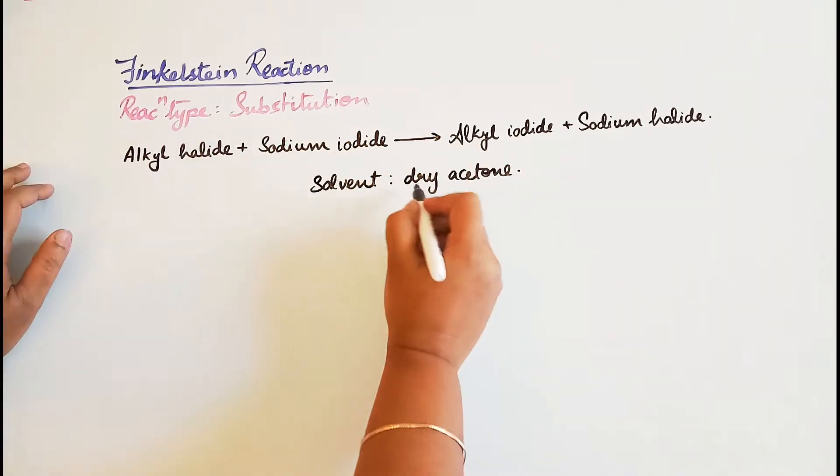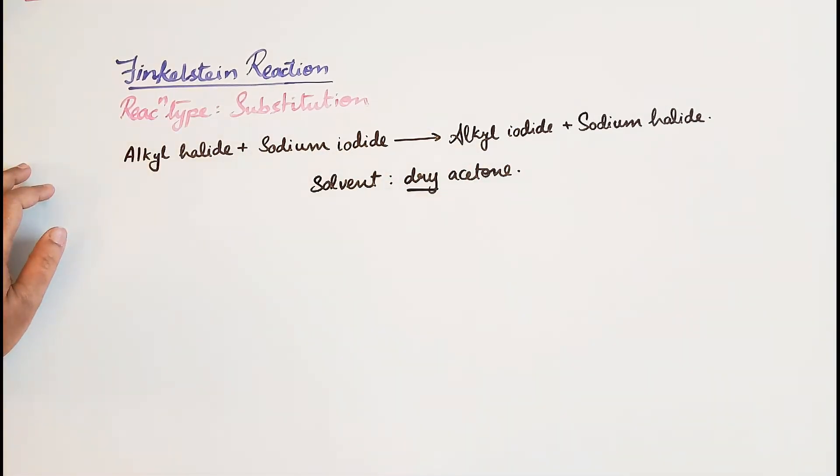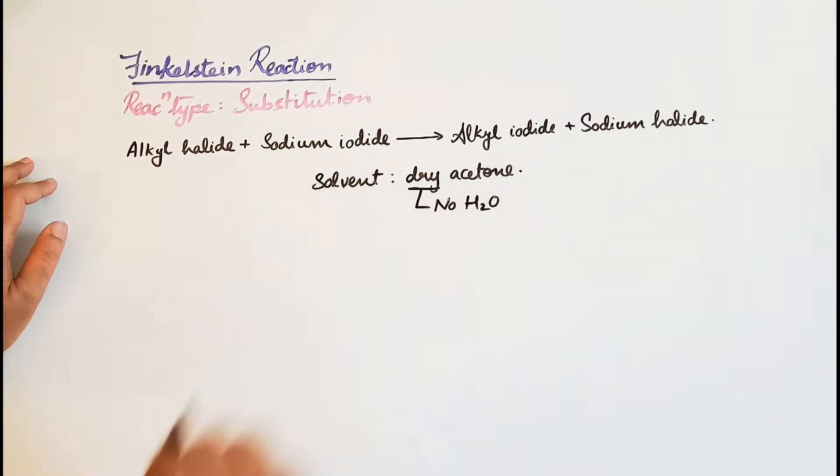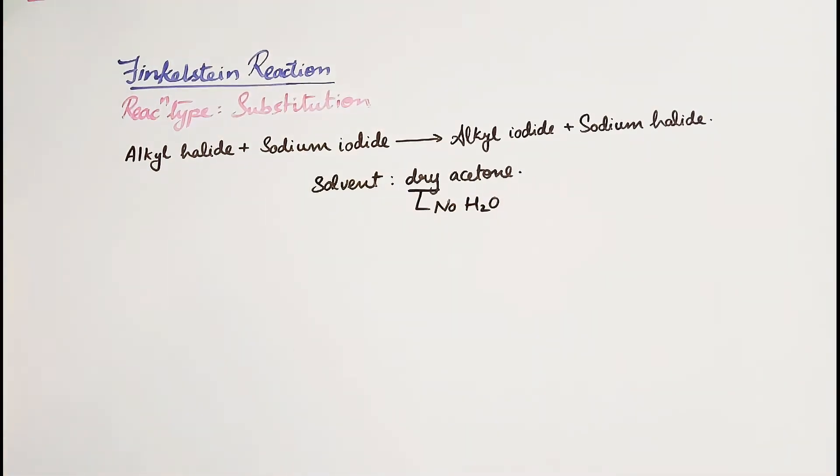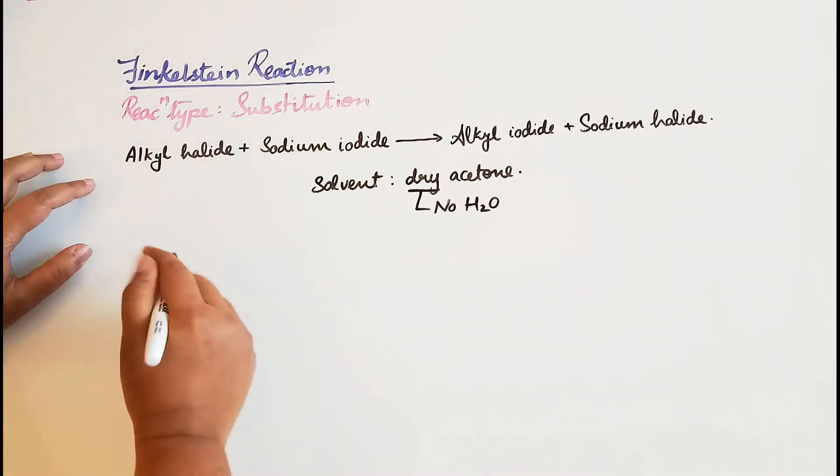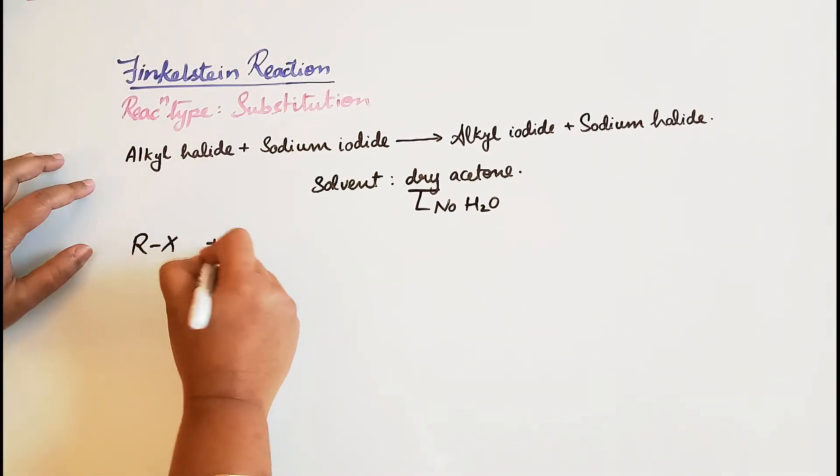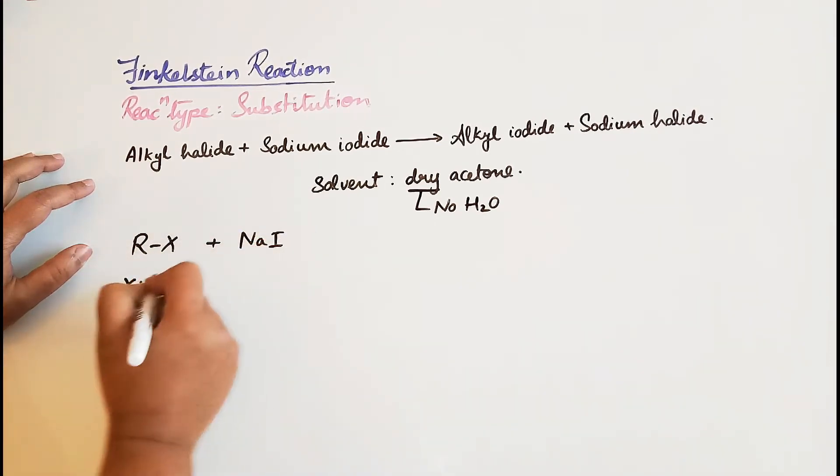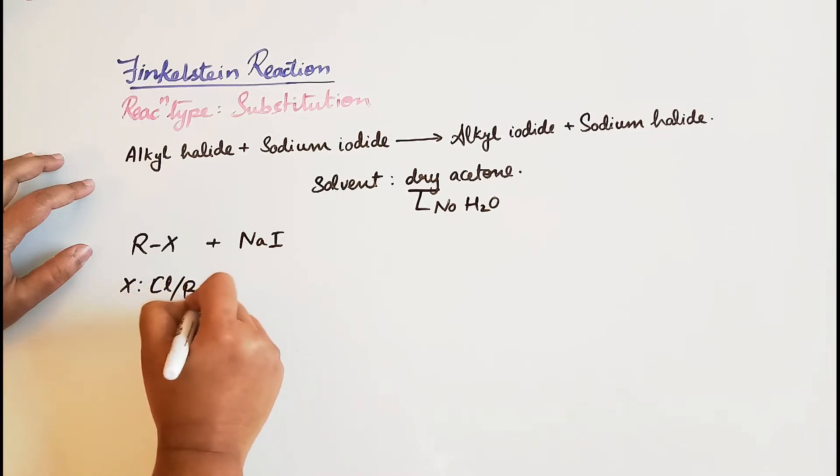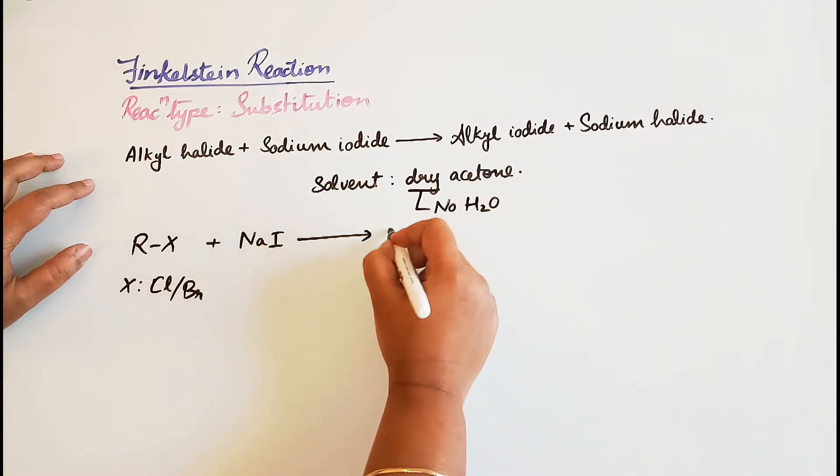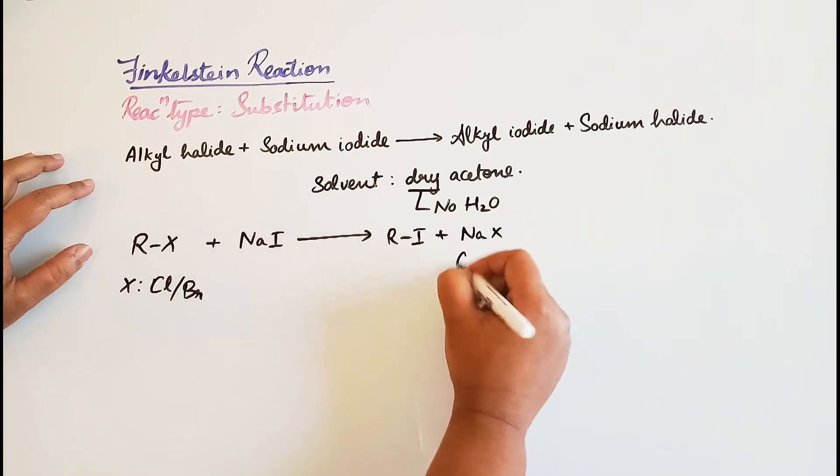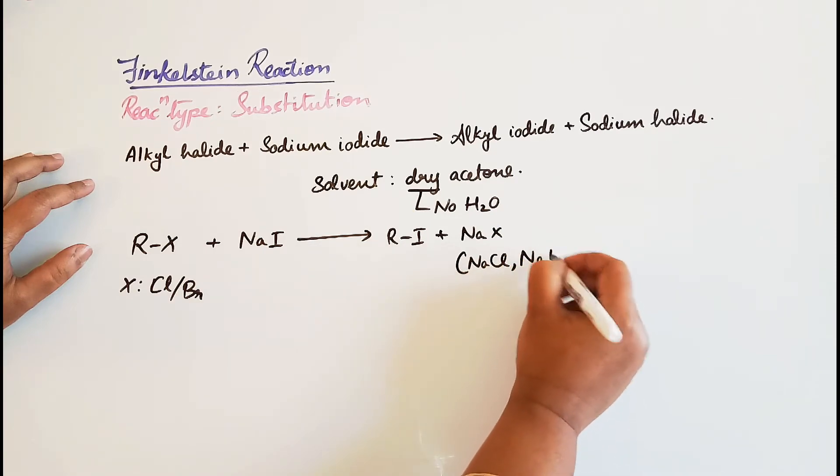The reason 'dry' is important is because it does not have any molecules of water. Our reactants are R-X and NaI, where X is Cl or Br, to give R-I plus NaX. NaX can be either NaCl or NaBr.